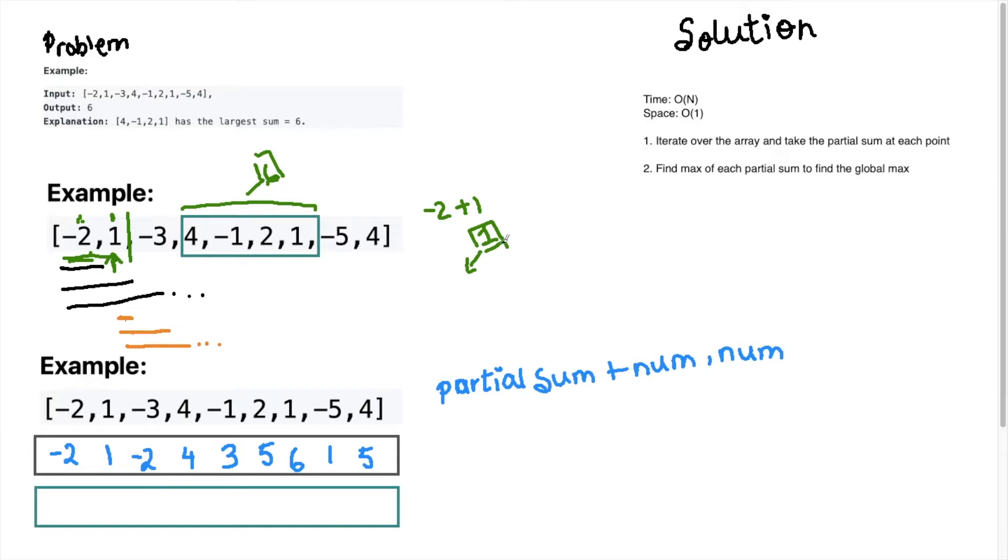So we just need to ask ourselves, at each time, if I take the max, can I find my total global sum? And that's the idea behind solving this problem. So I will go into more details and manually solve this problem first before looking at the code.